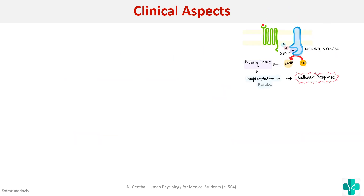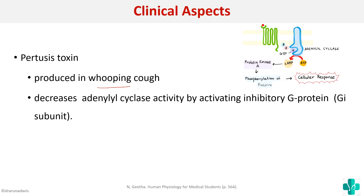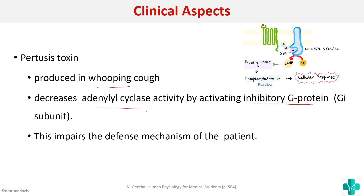Another applied aspect is the mechanism of action of pertussis toxin, produced in whooping cough. Pertussis toxin activates the inhibitory G proteins, causing a decrease in adenylyl cyclase activity. This leads to a decrease in cAMP, which in turn impairs the defense mechanism of the patient. That is how pertussis toxin acts.